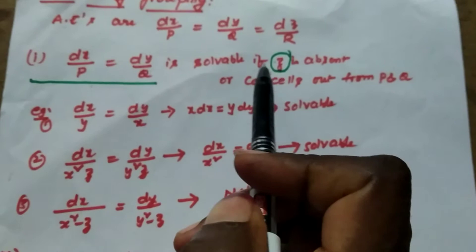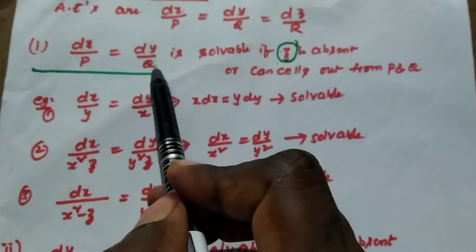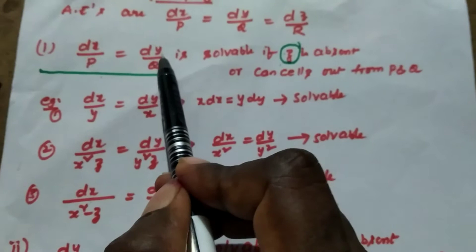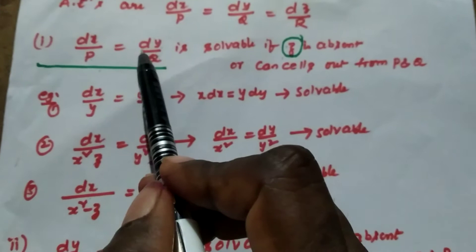The second condition is if p and q contain z but we are able to remove z from p and q by cancelling it, then we can find the solution. However, if we are not able to remove z from p and q, then we cannot find the solution from these two fractions.